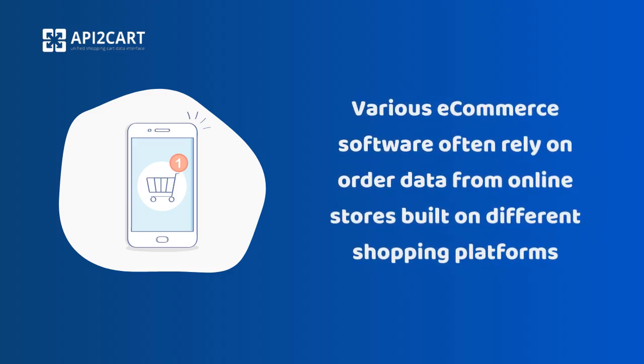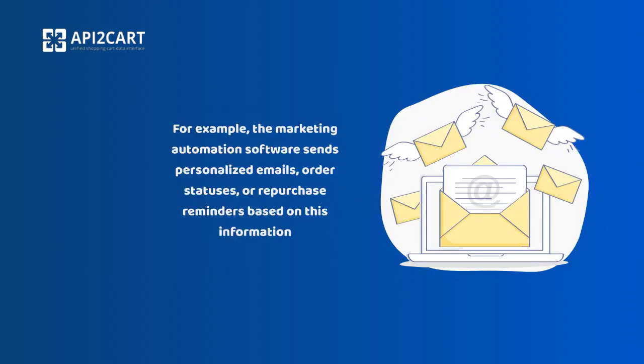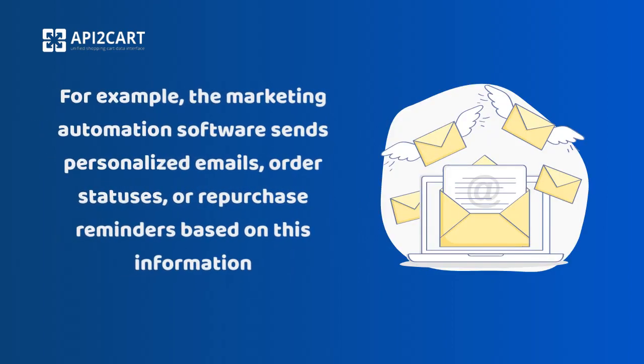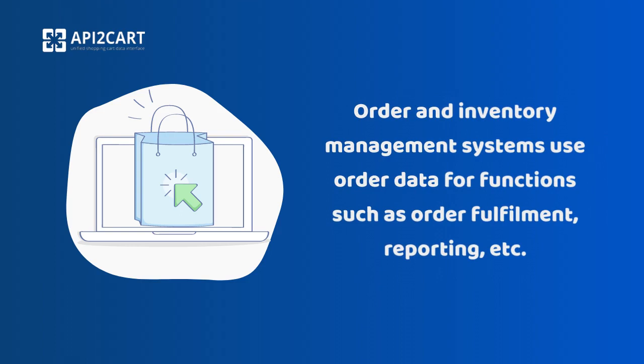Various e-commerce software often rely on order data from online stores built on different shopping platforms. For example, the marketing automation software sends personalized emails, order statuses, or repurchase reminders based on this information. Order and inventory management systems use order data for functions such as order fulfillment, reporting, etc.